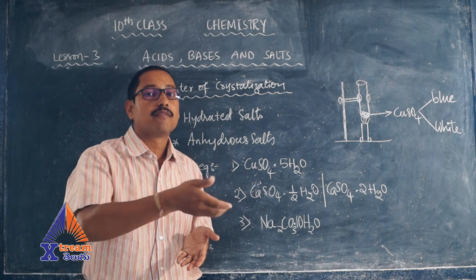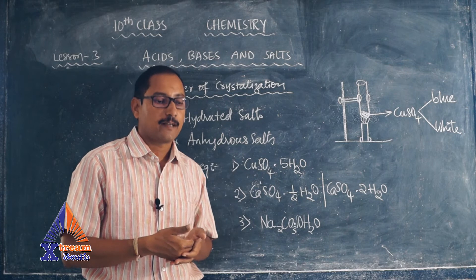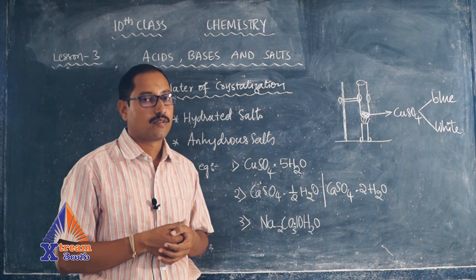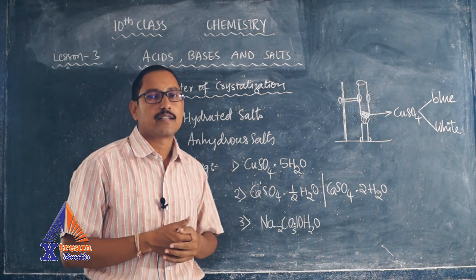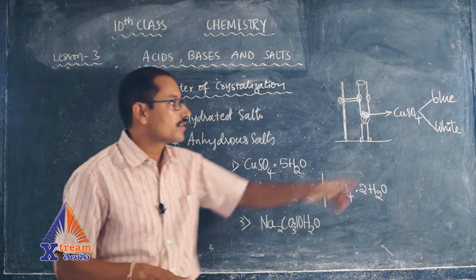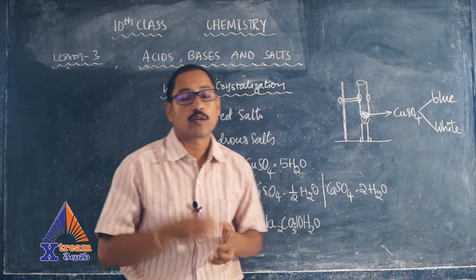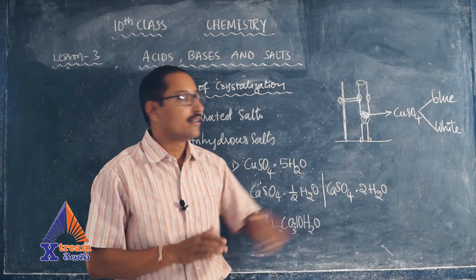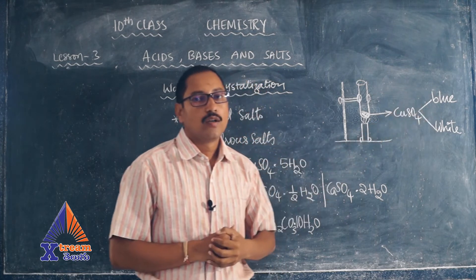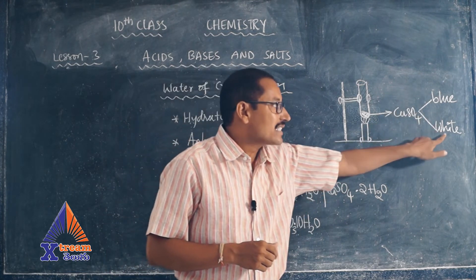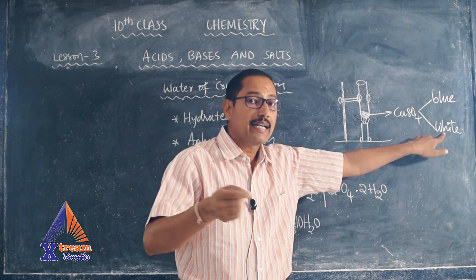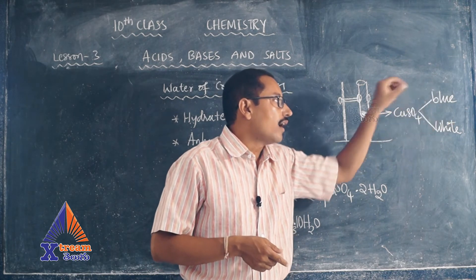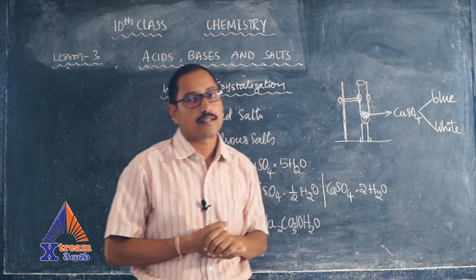Sometimes water of crystallization gives the crystal a special property — for example, its color can change. If copper sulfate is taken without water it is white in color, but when water gets added into the crystal it turns blue. So hydrated copper sulfate is blue in color and anhydrous copper sulfate is white in color.